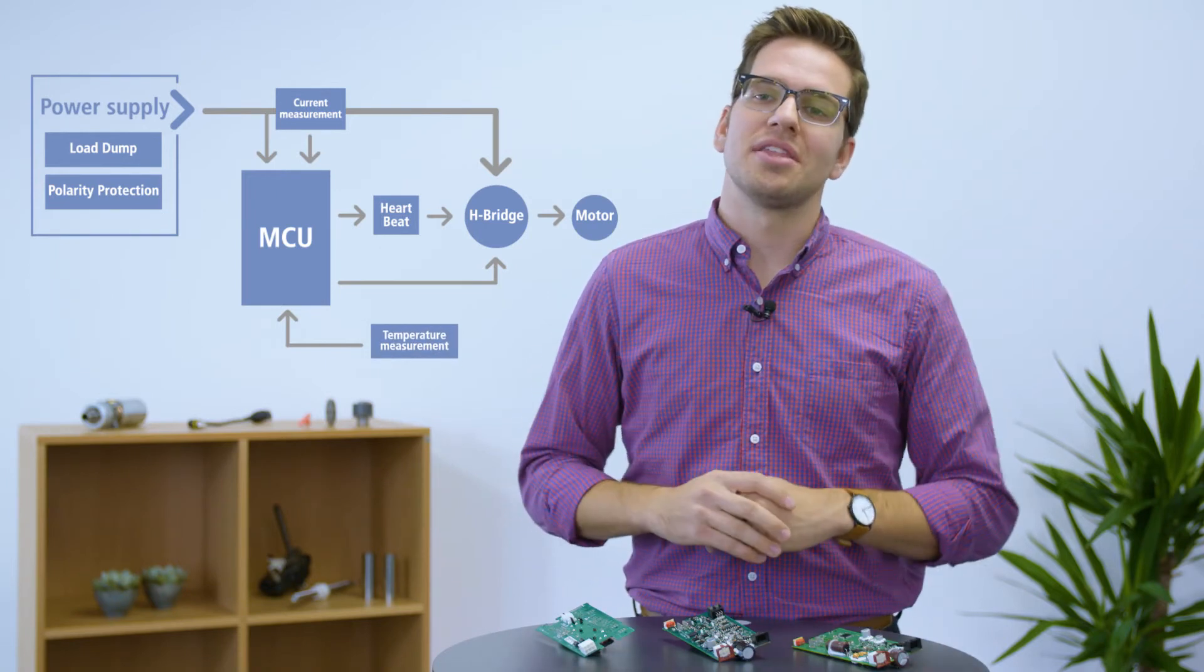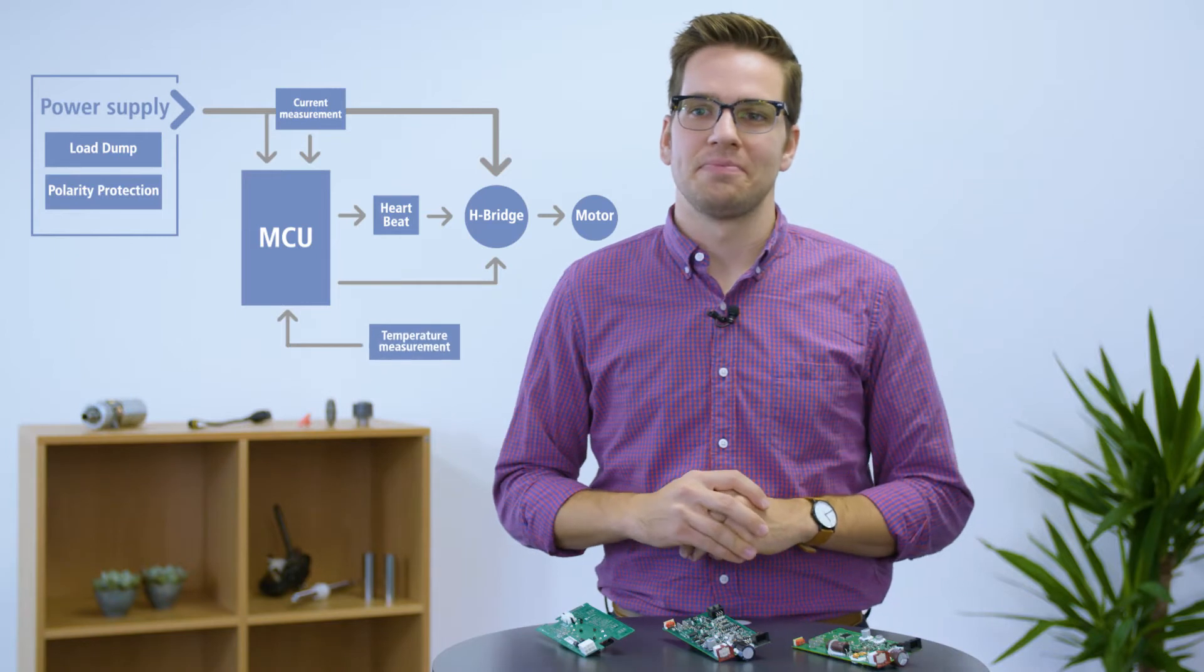When the temperature is back within the limit, you can run the actuator again. However, if the temperature falls below the freezing point, more power may be necessary to run the actuator. In such cases, the PCB will raise the current limits to allow for the movement.